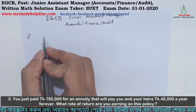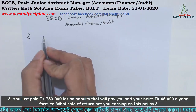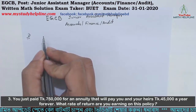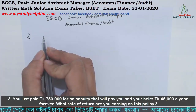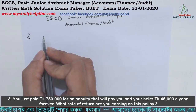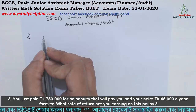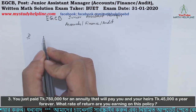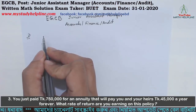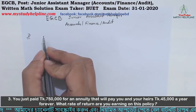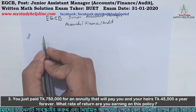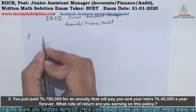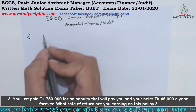You just paid 750,000 for an annuity that will pay you and your heirs 45,000 a year forever. What rate of return are you earning on this policy?